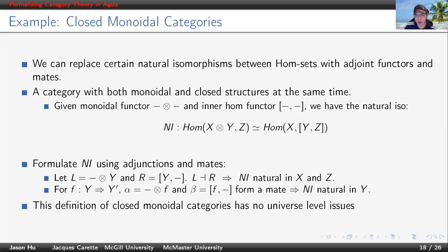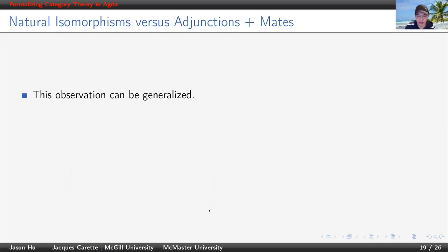Obviously, now, this definition of closed monoidal categories involves, again, no universe level or hom-set, and therefore, is more type-theoretic, is more type-theory friendly. After a bit of thinking, we can see that this observation can be generalized. We can apply the same technique to the natural isomorphisms in this form.